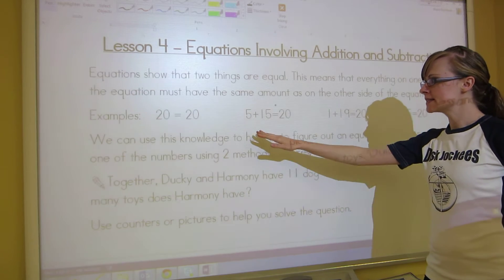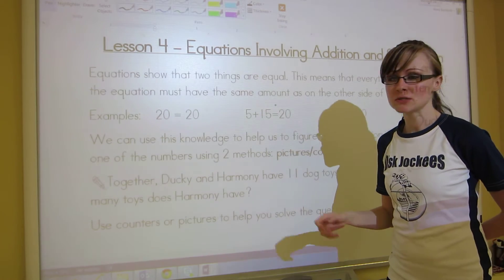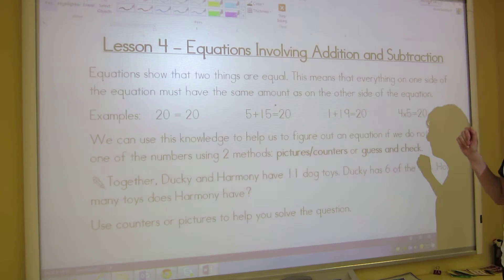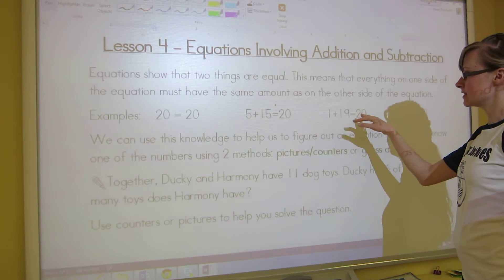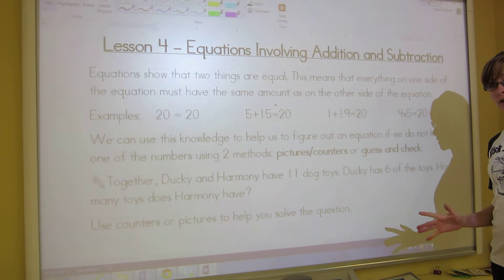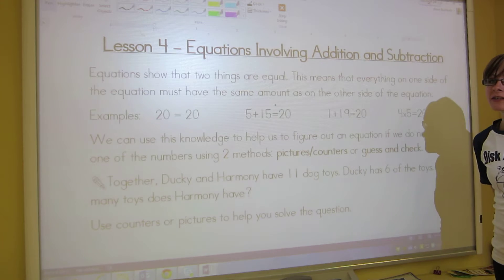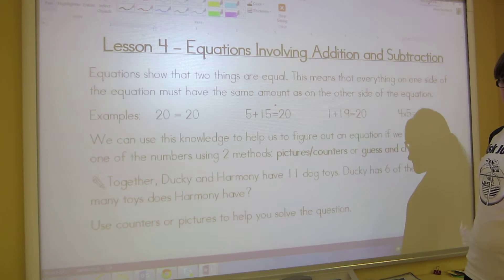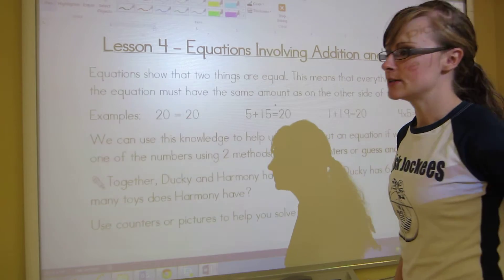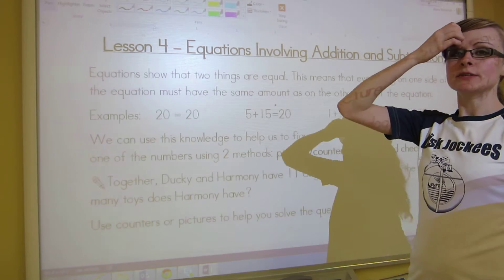So we go pretty simple here. 20 is equal to 20, so that's saying we have equal amounts on either side. Another one is 5 plus 15 equals 20. We've got 1 plus 19, that equals 20. And then we can even get into multiplication, which we'll be getting into more in the next lesson. 4 times 5, that also is equal because we have 20. So you'll notice that all of them are 20 on the right side of the equation. It's just that the left side changes, but it's always going to equal 20 as long as the equation is true.